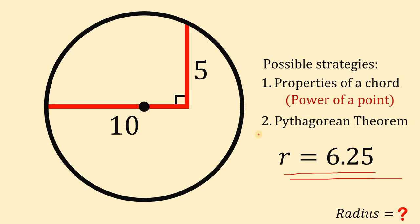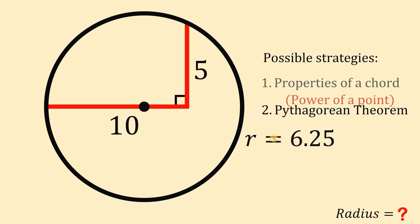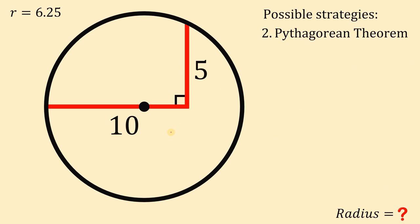Now, how about the second strategy which is the Pythagorean theorem? How can we use the Pythagorean theorem in this kind of question? To use it, from this center, let's draw the radius of the circle and call this R.